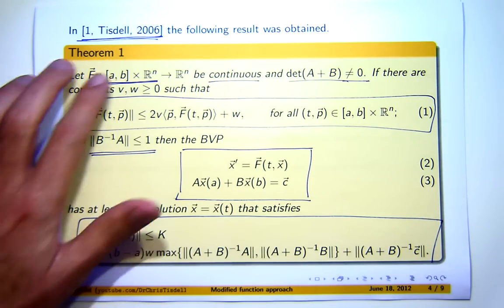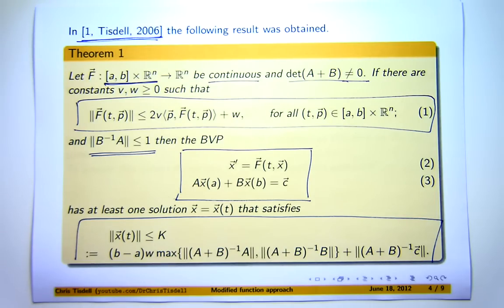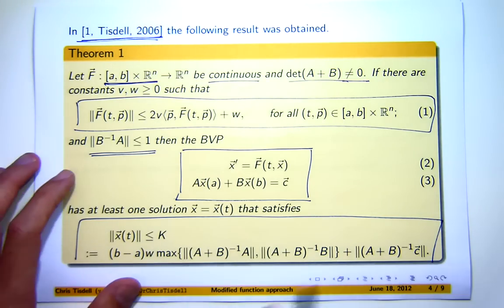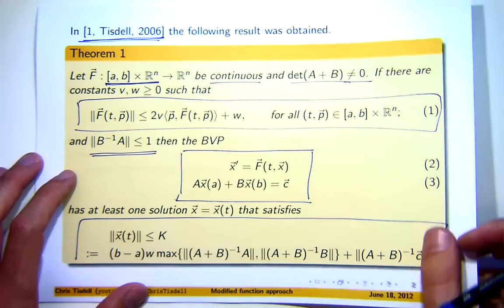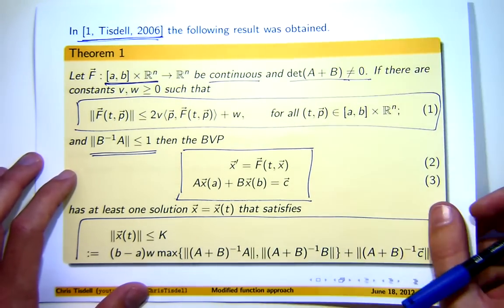Now, I proved that in this paper using so-called fixed-point methods. Now, you could reprove this using all sorts of approaches, Schauder fixed-point theorem, topological transversality, Schaefer's fixed-point theorem. But in that paper, I actually used Leray-Schauder degree. Now, we're going to actually use this and apply it to another boundary value problem.